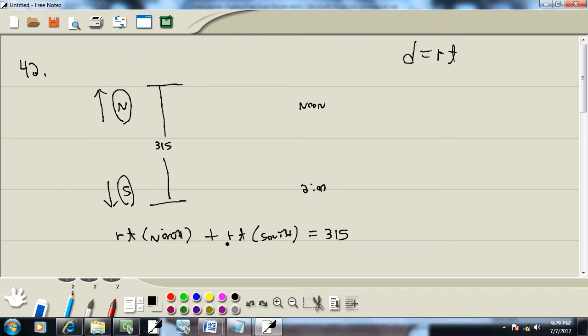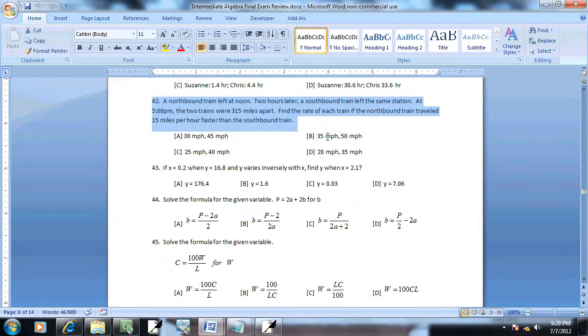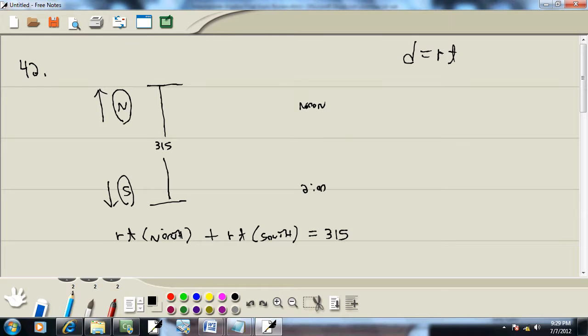Now the r and t of these will probably be different, so realize that. And one of them is given to us directly. It says at 5 o'clock they're at that point. Well if this one started at noon and it's now 5 o'clock, the northbound train has been going for 5 hours.